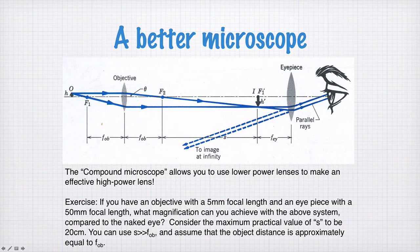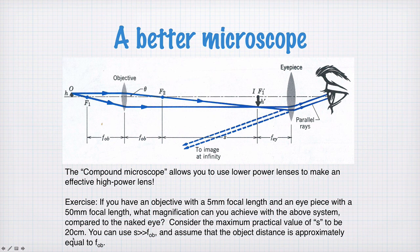Here is an exercise to consider. If you have an objective with a 5mm focal length, so f_ob is 5mm, and an eyepiece with a 50mm focal length, what magnification can you achieve compared to the naked eye? Consider a practical maximum value of s of about 20cm, since you don't want your microscope to be too enormous. You can use the approximation that s is much greater than f_ob, and assume the object distance is approximately equal to f_ob. Using these approximations will make doing this problem a lot easier.